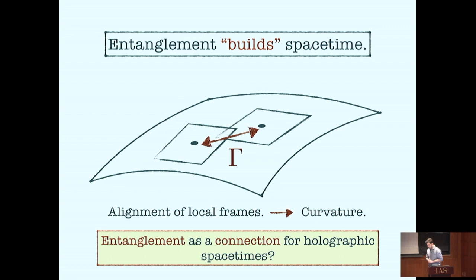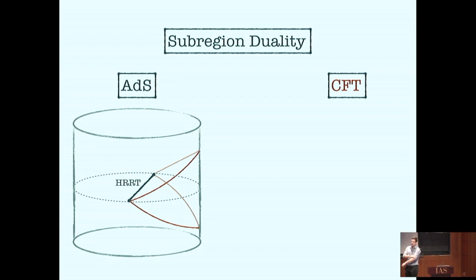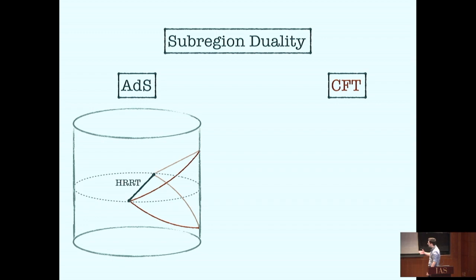An idea worth exploring is that entanglement plays an analogous role for holographic spacetimes — analogous to the connection in the usual way of building geometries. In ADS-CFT, we don't have access to the local structure, to the properties of the tangent spaces, and we don't have the conceptual or computational tools to address these questions. But there's another development put on firm ground in recent years: sub-region duality, which allows us to talk about physics in a different piece of space — the entanglement wedge. It's a piece of space selected by a Ryu-Takayanagi surface, defined as the part of spacetime that is spacelike separated from the RT surface.